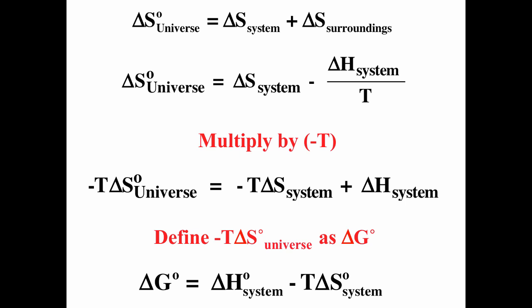We can think about the universe as composed of the system plus the surroundings. The only thing that can be transferred between system and surroundings is heat and work. The only thing that can change the entropy of the surroundings is heat. ΔH is defined as heat transferred to the system under constant pressure. Therefore, ΔS of the surroundings equals −ΔH over T.